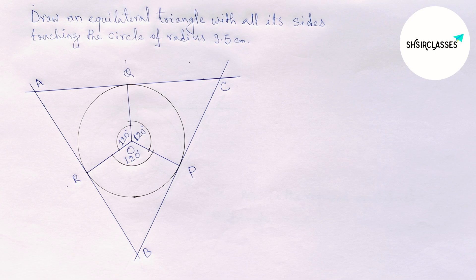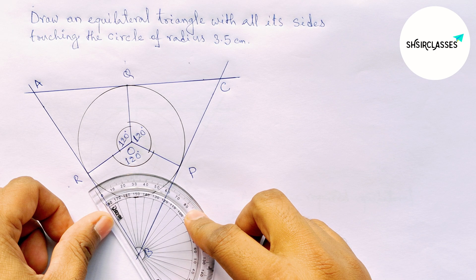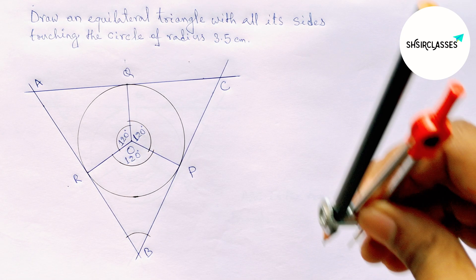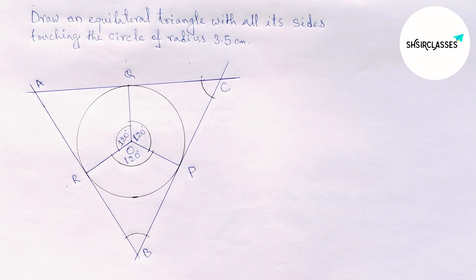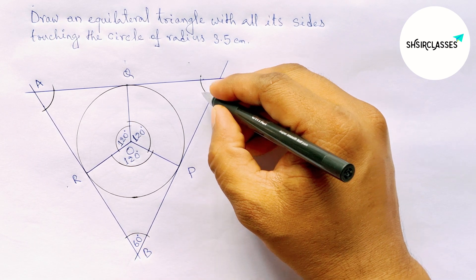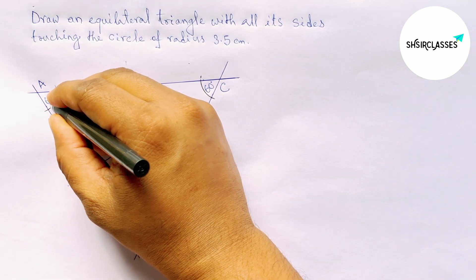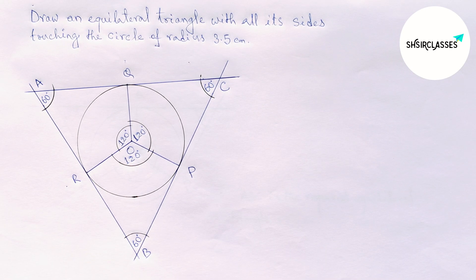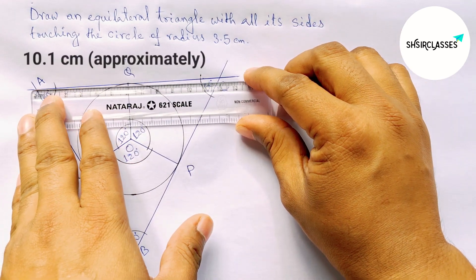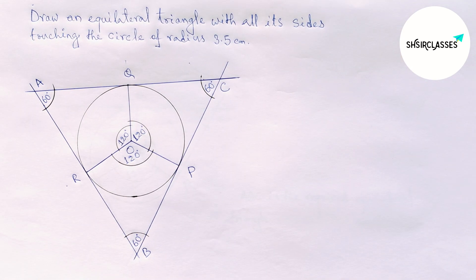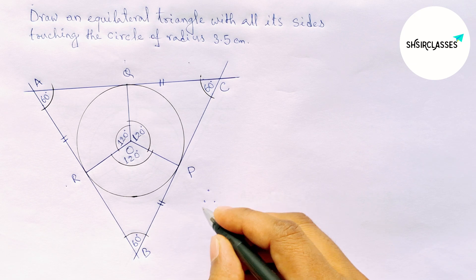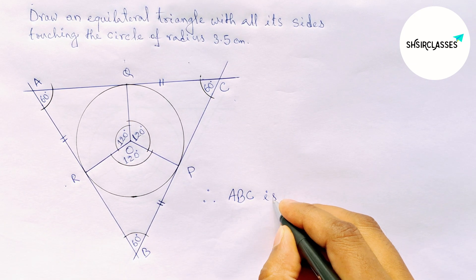Now measure the angles of this triangle. Each angle is 60 degrees — as you know, all angles of an equilateral triangle are 60 degrees and equal. Mark all three angles: 60 degrees, 60 degrees, and 60 degrees. Next, measure the length of each side — it equals approximately 10.1 centimeters. All three sides are equal, so mark the equal symbol on each side.